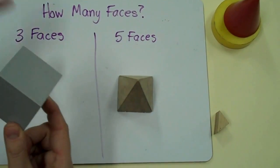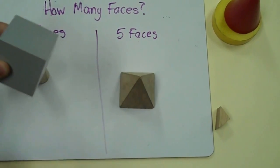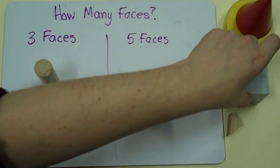A cube has one, two, three, four, five, six faces. It does not belong in either group.